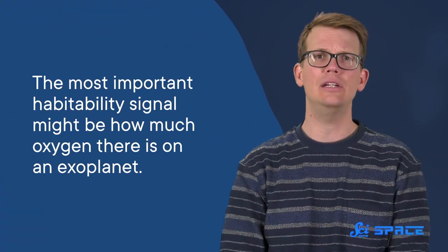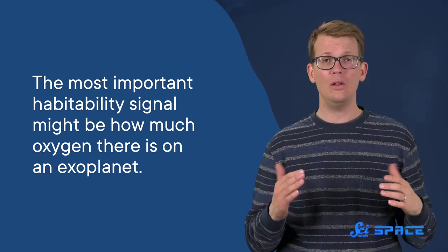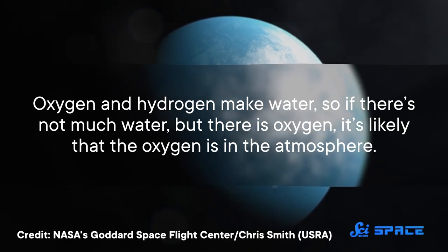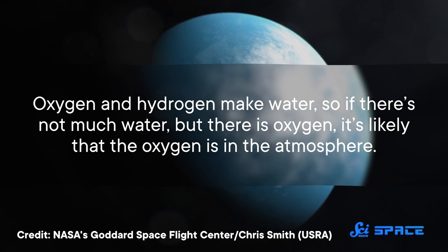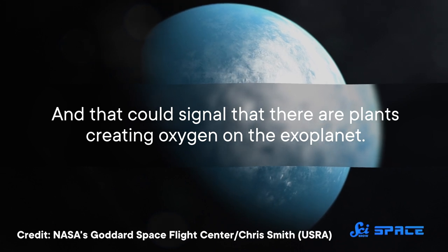And speaking of gas, the most important habitability signal might be how much oxygen there is on an exoplanet. LOOP images will be able to help scientists estimate the amount of oxygen by combining cloud and water data. Oxygen and hydrogen make water, so if there's not much water but there is oxygen, it's likely that the oxygen is in the atmosphere. And that could signal that there are plants creating oxygen on the exoplanet.